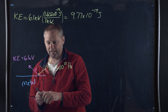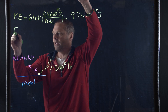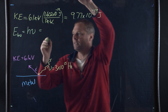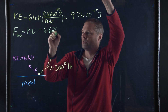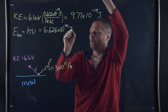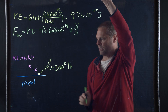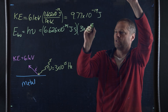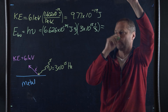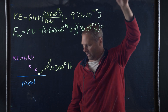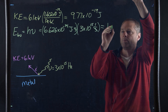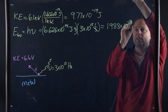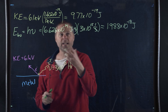Now we need to determine the energy of the light. The energy of the light is H nu, equal to Planck's constant — 6.626 times 10 to the negative 34 joule-seconds — times the frequency, which is 3 times 10 to the 15th hertz. A hertz is an inverse second, so the seconds cancel and we're in units of joules. When we do this calculation, we get 1.988 times 10 to the negative 18th joules. That's the energy of the light, and the 9.77 times 10 to the negative 19th joules is the kinetic energy of the ejected electron.